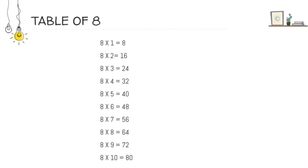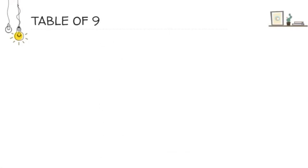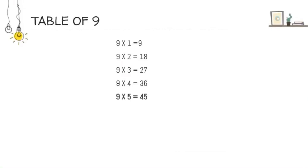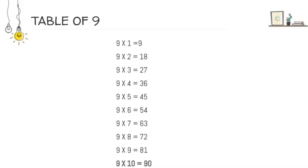Next one is table of 9. 9 1's are 9. 9 2's are 18. 9 3's are 27. 9 4's are 36. 9 5's are 45. 9 6's are 54. 9 7's are 63. 9 8's are 72. 9 9's are 81. And 9 10's are 90.